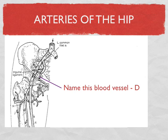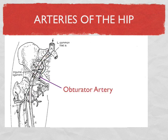Without looking at your handout, let's see if you can name blood vessel D just by knowing the bones. It seems to be running down through a hole here. What would you call this artery? You'd call it the obturator artery — and you can get that because you know the bones.